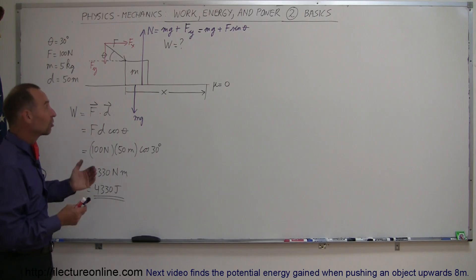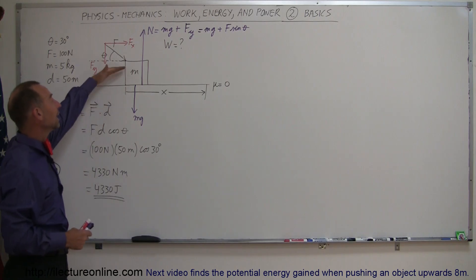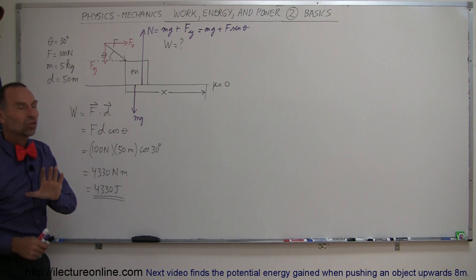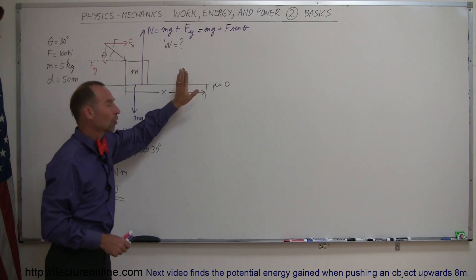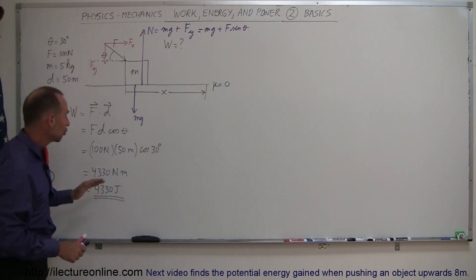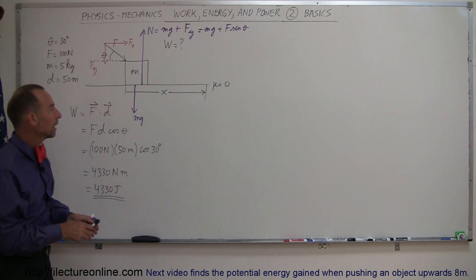And what kind of energy? Well, it's actually kinetic energy, because the block did not gain any height. Potential energy, in this case, would be gained if the block had gained altitude or height, but since it's all on a flat surface, all of that 4,330 joules will have been converted into kinetic energy.